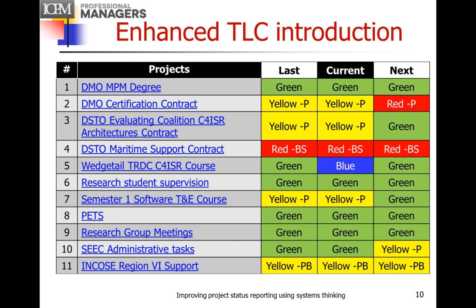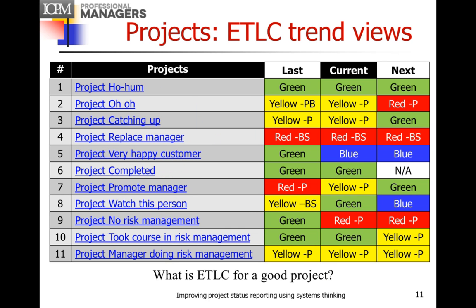Let's look at what these trends mean for specific projects. Green, green, green — within budget, on schedule, no problems. Did we overestimate, or do we have a good project manager? Yellow, yellow, heading into red — we need to look at it. Number 3: the project is catching up. Number 5: we were green, now blue and blue — we've got a really happy customer. Number 6: green, green, and then complete.